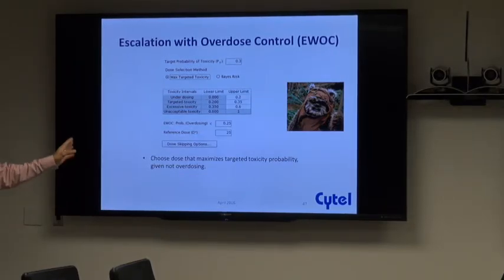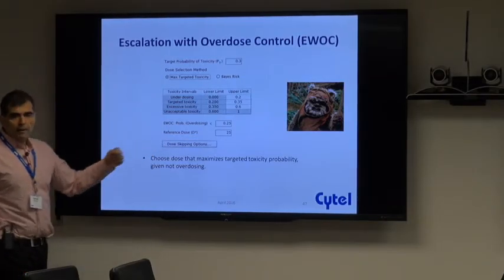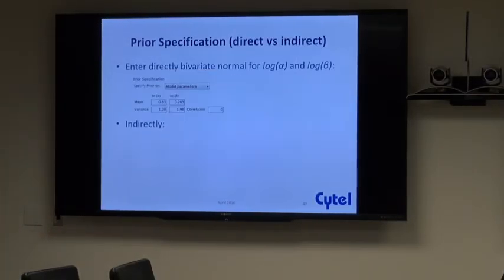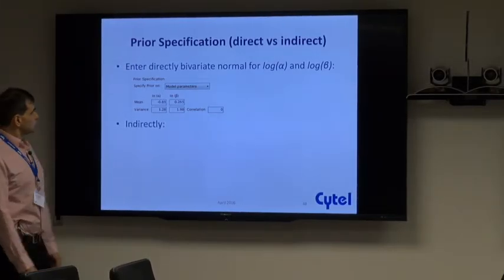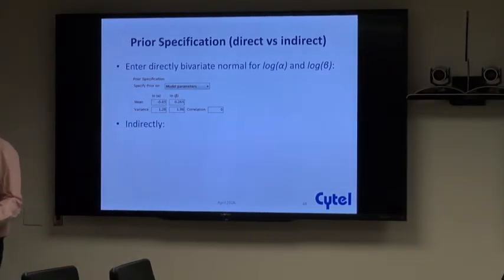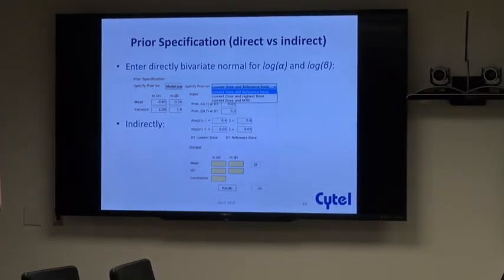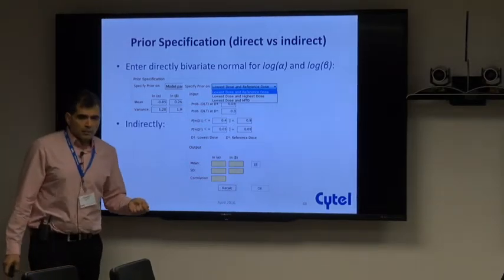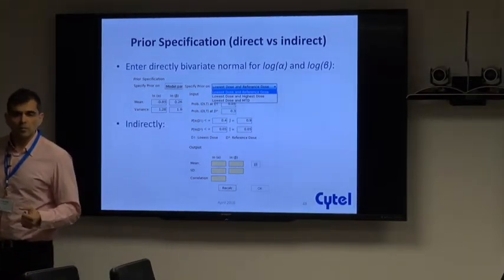Specifying the bivariate normal prior distribution can be challenging. If you can put down means, variances, and correlations for log-alpha and log-beta directly, you're ahead of most people. What we advocate is doing this indirectly. Considerable work has been done to elicit information from clinicians in a space they're more comfortable with — for example, asking what they think the toxicity probability will be at the lowest dose, and what their best guess for the MTD will be.